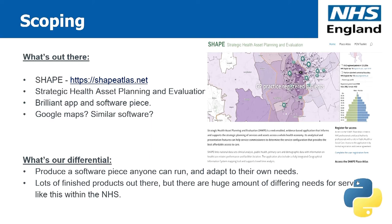So what is out there? ShapeAtlas.net is a wonderful piece of software built by Public Health England. It's a brilliant piece of software — it has everything from LSOA layers to age breakdowns for areas and healthcare service locations — but it is closed. So what's our differential? We wanted to produce a piece of software or code that anyone could run in the NHS and adapt to their own needs, keeping it flexible and open, using open source tooling and freely available data.